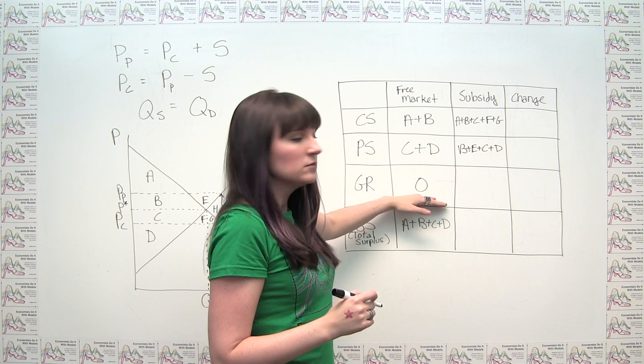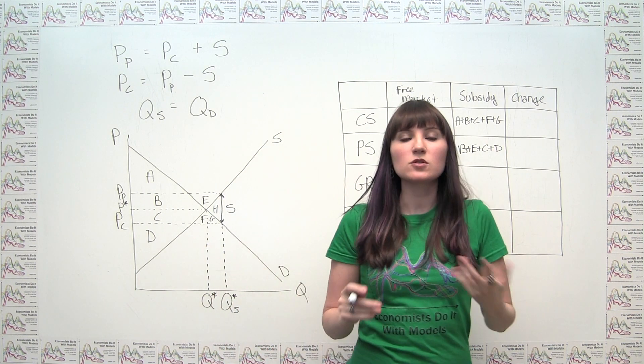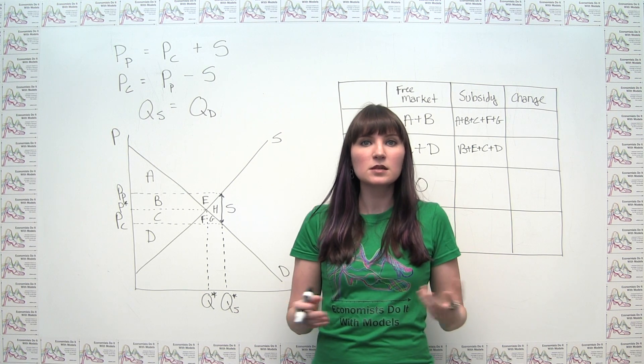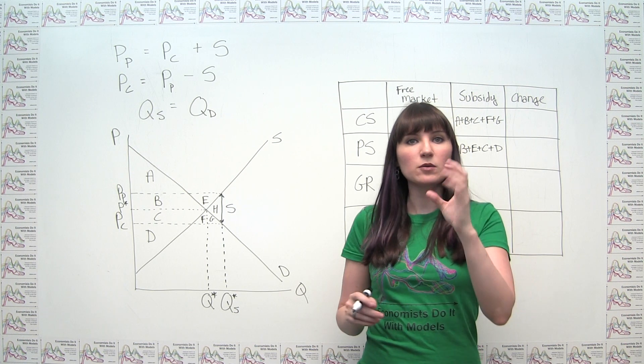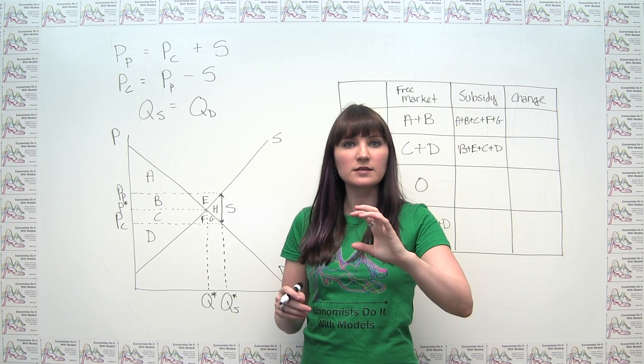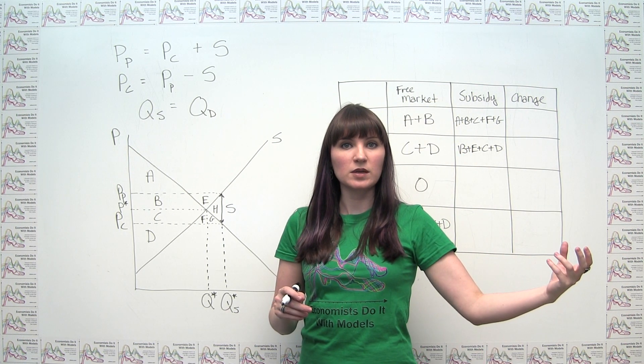Government revenue, now, is a little bit of a strange animal. So remember, when we talked about a tax, the government revenue collected from that tax was just the amount per unit of the tax times how many units were being bought and sold.